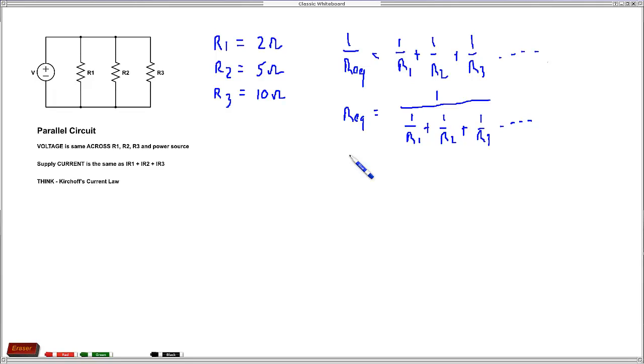So what we really need to do in a parallel circuit is we really need to find what all the currents are because each time we add another resistor we're adding another path for current. And so once you realize that and that we're really looking for current here, it's current that's the key, we're adding current every time we add another resistor.